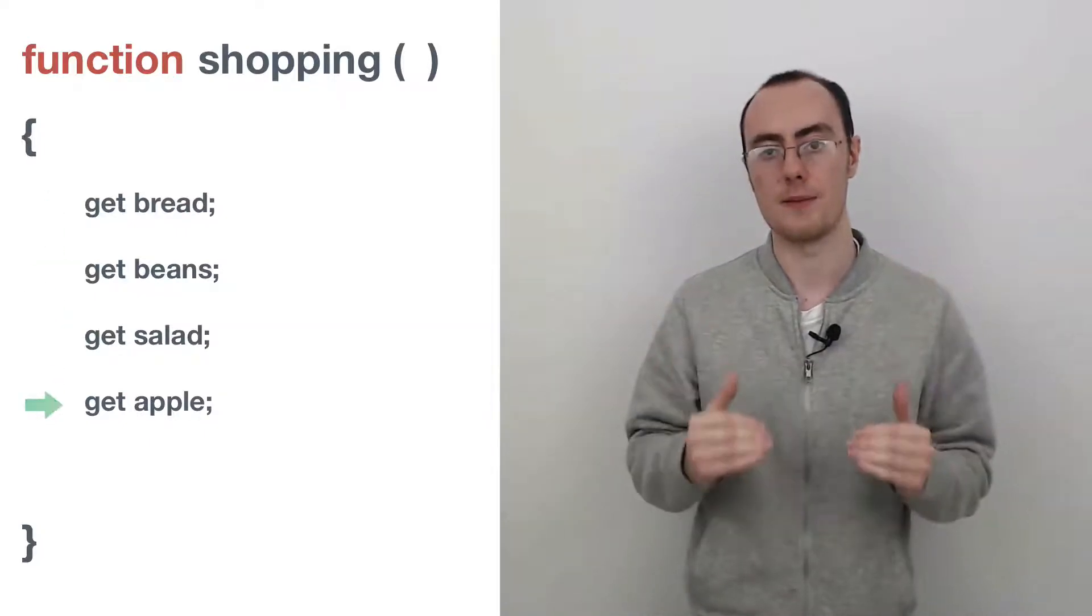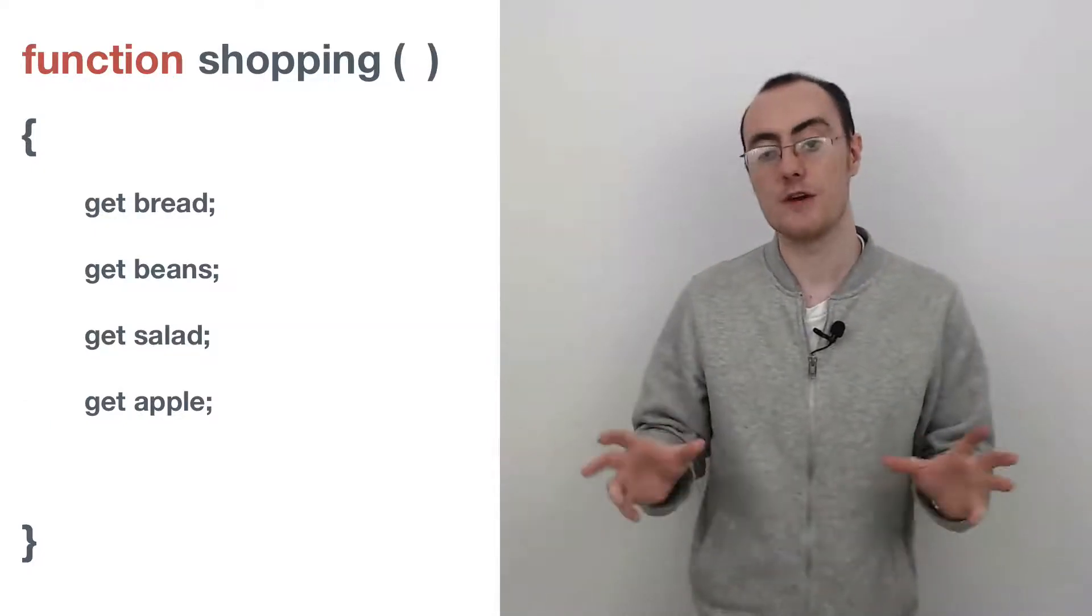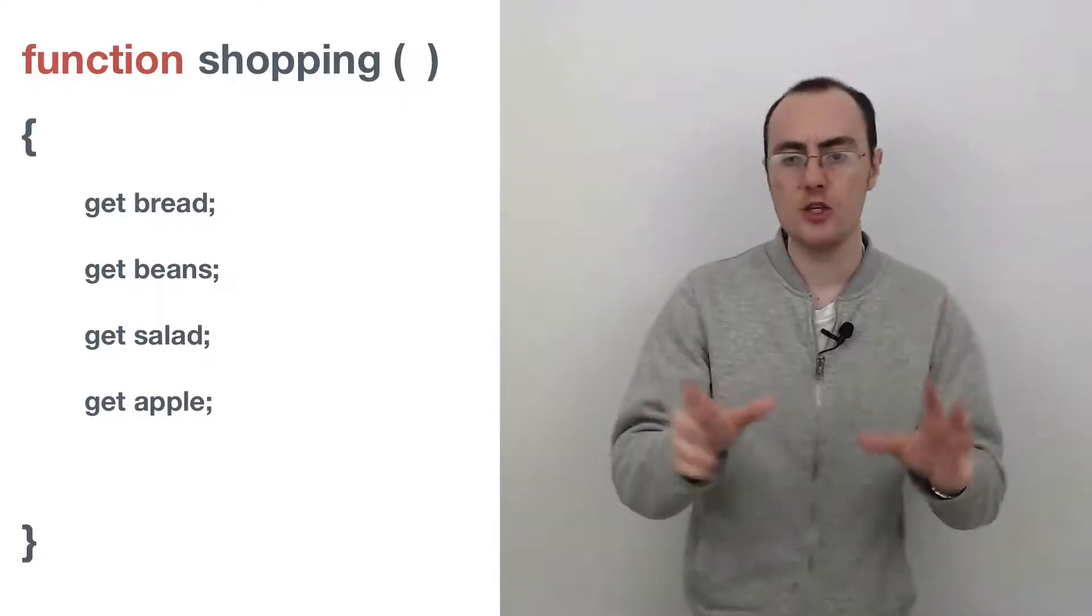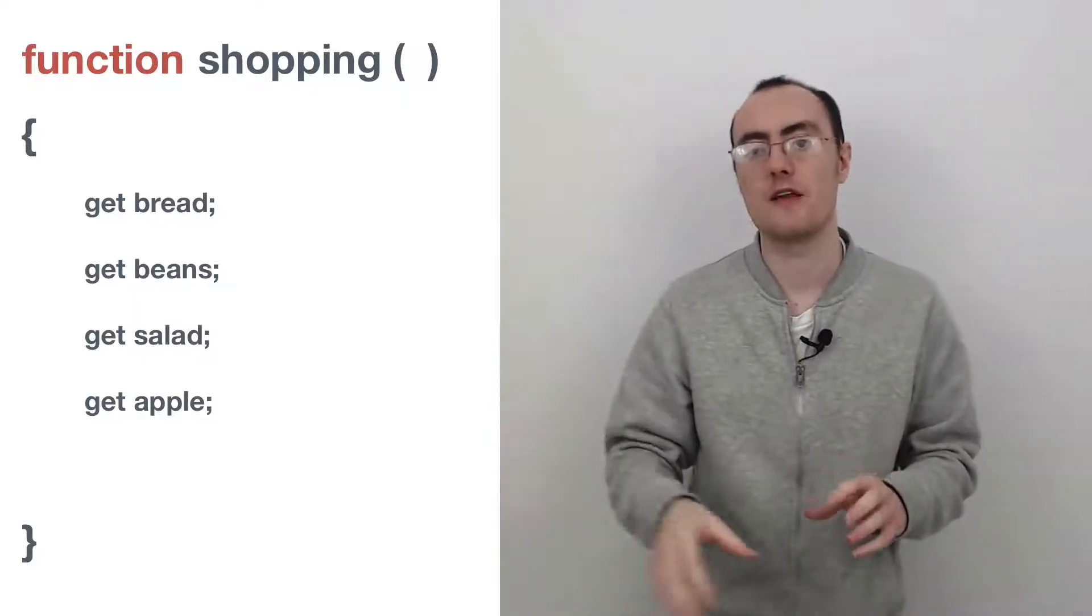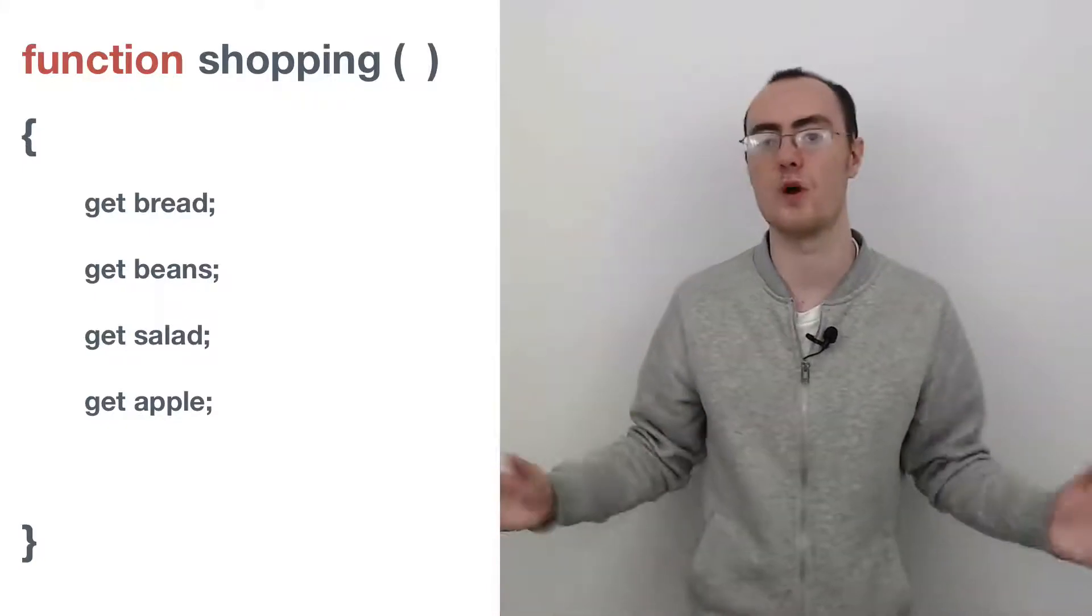And what we want to do is we want to tell it what to do to complete the entire experience. So for example, we have shopping and we have the execution context and what we want to do is go around the aisles. We want to fetch different items, whatever it may be, bread, vegetables, whatever it may be.